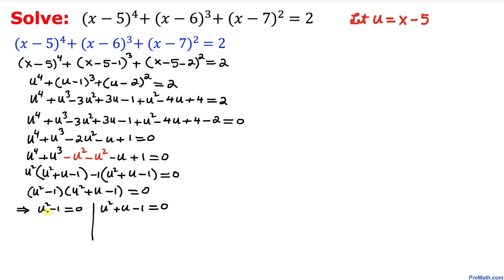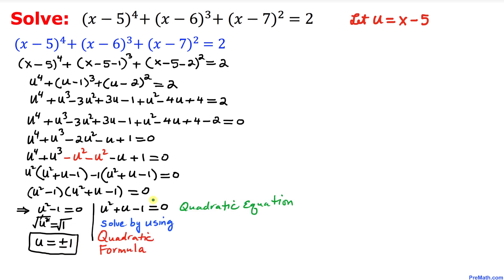Now let's solve each factor. For u² minus 1 equals 0: moving negative 1 to the other side gives u² equals 1. Taking the square root of both sides, u equals positive or negative 1. So we get two values: u equals 1 and u equals negative 1.